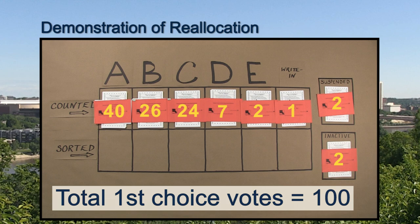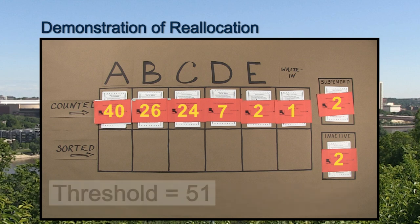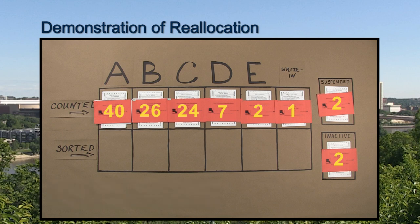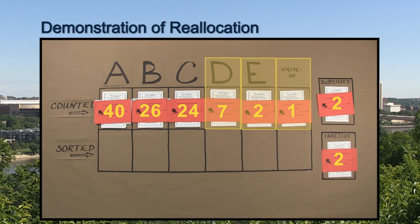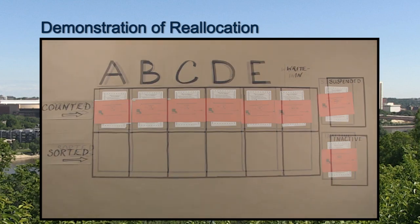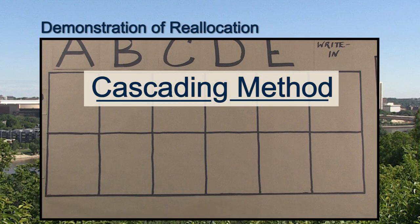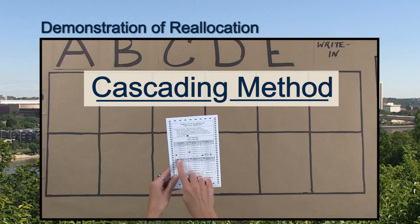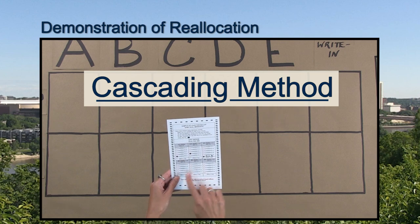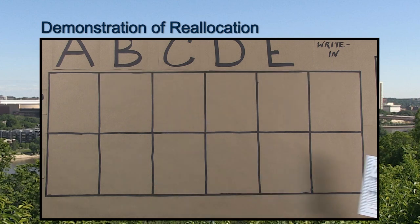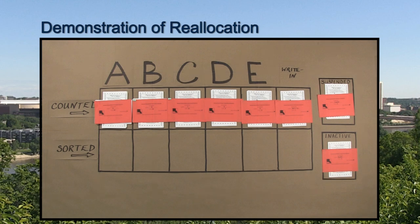If no candidate has reached the threshold to win the election, it will be determined if it is mathematically impossible for any of the candidates to be elected. Because it is mathematically impossible for candidate D, E, and write-in to win the election, their first choice votes are eliminated. The ballots for the eliminated candidates will be reallocated by cascading to the next viable choice. Any ballot for which no viable choice remains will be placed in the inactive pile for the duration of the reallocation.